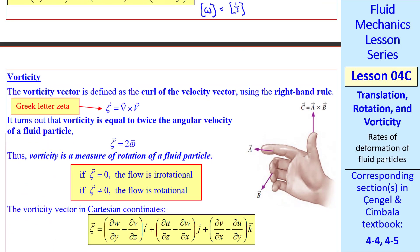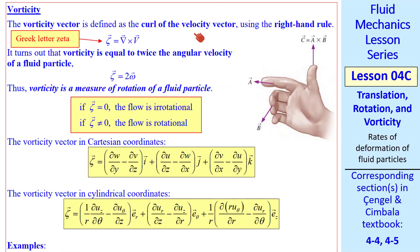Now let's define vorticity. The vorticity vector is the curl of the velocity vector. You get that by using the right-hand rule. My cousin, Dud Cimbala, will demonstrate the right-hand rule.